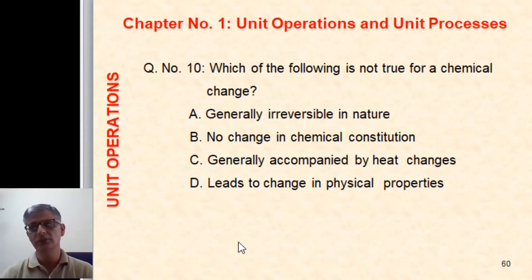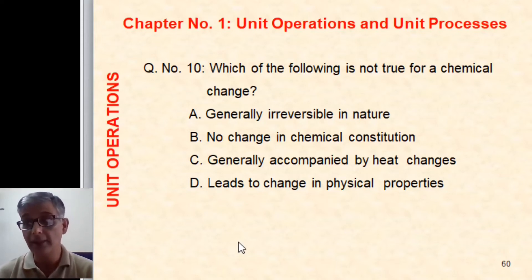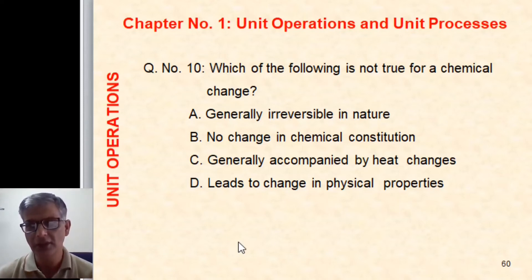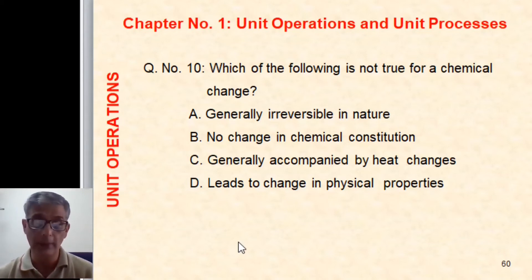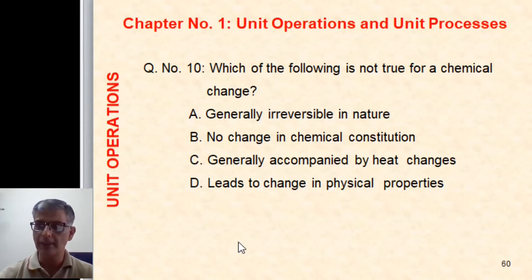Question ten: which of the following is not true for a chemical change? Choices: generally irreversible in nature; no change in chemical constitution; generally accompanied by heat changes; leads to change in physical properties. Chemical change is generally irreversible — true. No change in chemical constitution — that is wrong, because chemical constitution always changes in a chemical change. Accompanied by heat changes — true. Leads to change in physical properties — true, since a new compound is formed. The right answer is B: no change in chemical constitution.